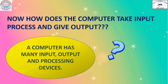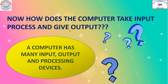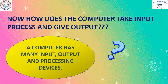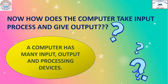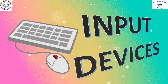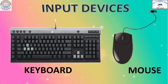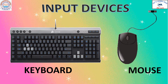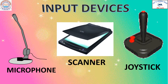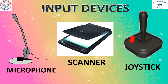Now, how does the computer take input, process it and give output? A computer has many input, output and processing devices. Let us learn about input devices now. This is the keyboard and this is the mouse. You have a microphone, this is the scanner, and this is called a joystick. You can play games with a joystick.